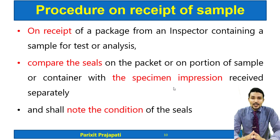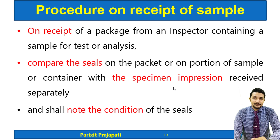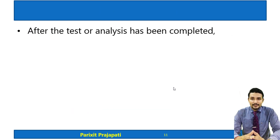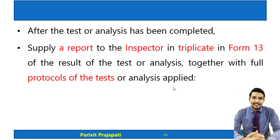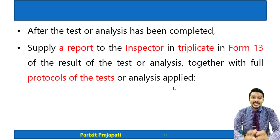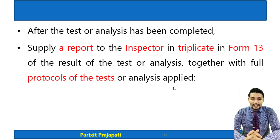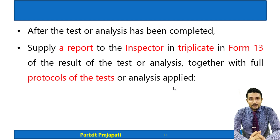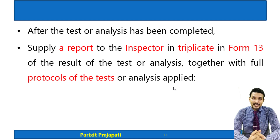The Government Analyst will compare both seals and record the condition of the seal — whether both seals are matching or not. After testing, they supply the report of analysis to the inspector. This report is sent in triplicate in Form Number 13, along with the full protocols of the test or analysis applied, detailing which procedure or protocol was followed.